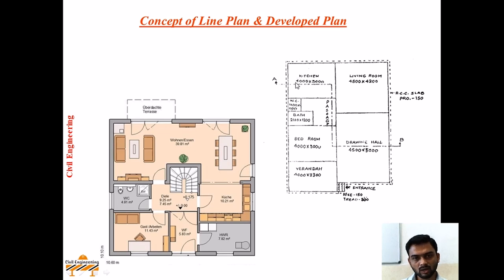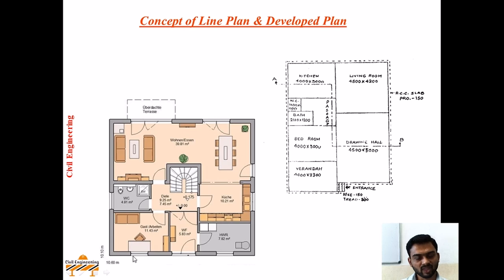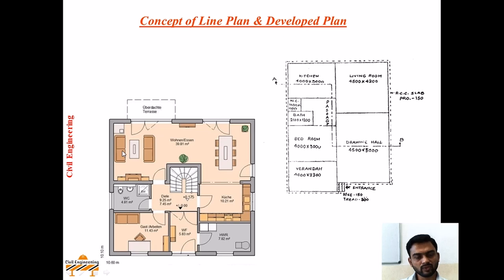Only lines are drawn and internal components of rooms having various sizes are shown. After finalization of this plan, a developed plan is drawn. Developed plan is nothing but a floor plan which is cut at the sill level. In this plan, wall thicknesses are considered and various components such as rooms, WC, and baths are shown with various sizes as per the aspirations of the client. This is the basic difference between line plan and developed plan.